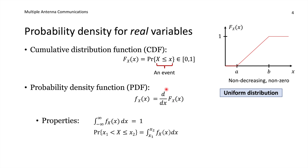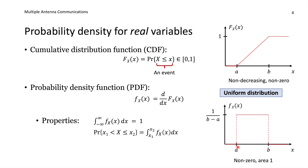If we take the first derivative of the CDF, we get the probability density function, or PDF. This describes how the probability mass is distributed over different numbers. The PDF is always non-negative, and integrating it from minus infinity to infinity gives 1, because that is the total probability. For the uniform distribution, the PDF is flat between a and b and zero elsewhere, with height 1 divided by (b minus a). The probability of a realization between x1 and x2 is obtained by integrating the PDF between those two values.